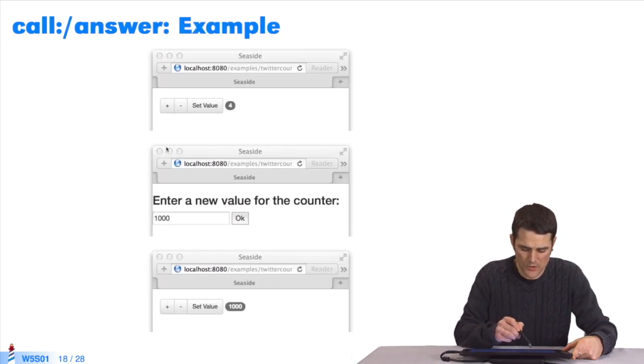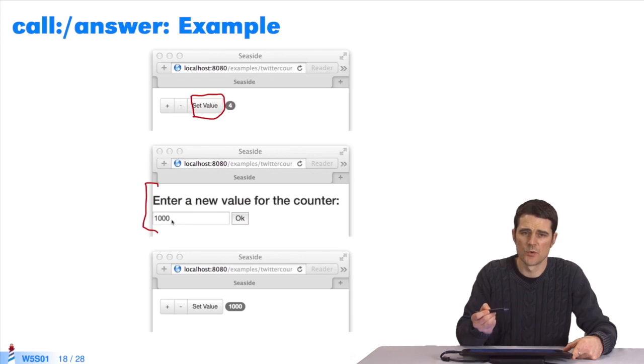I'll show you an example. Here we have a component, which was the counter. We've added a button here, set value. We imagine that set value allows the user to enter a new value for the counter. When we click on set value, a new component is displayed, which allows us to enter, a bit like the greeter component. We can enter a new value for the counter, click on OK. And when I click on OK, it goes back to our counter component, but with the value entered here by the user.